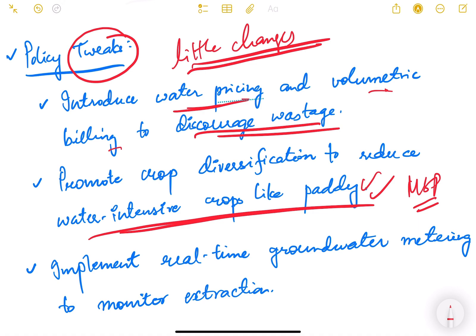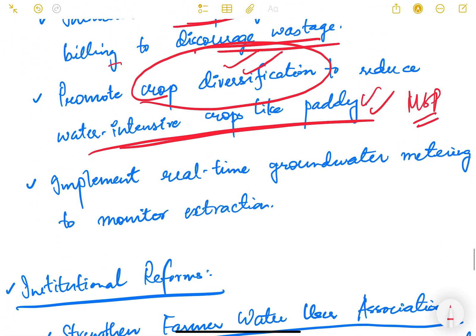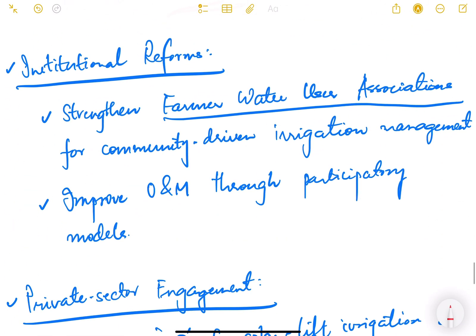For others, although MSPs may be declared, government does not do procurement itself. The open market forces will determine the actual price and farmers never know whether they will get remunerative prices or not. A very major challenge but crop diversification needs to be done, that is the future. Implement real-time groundwater metering to monitor extraction. We need to do this to monitor the groundwater extraction.